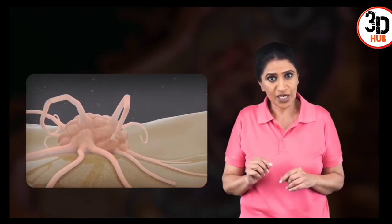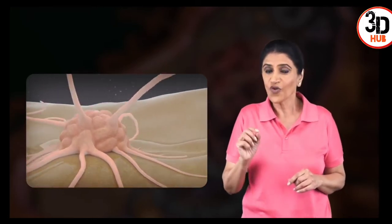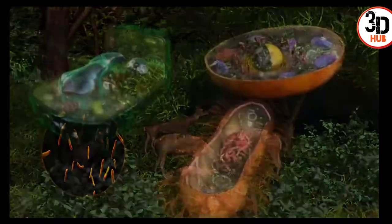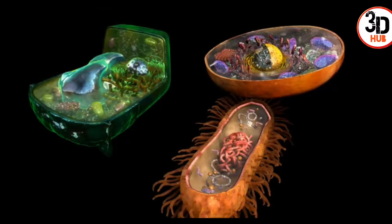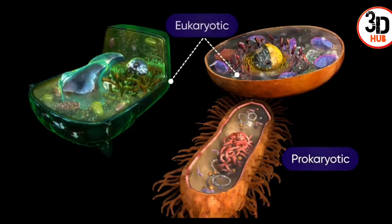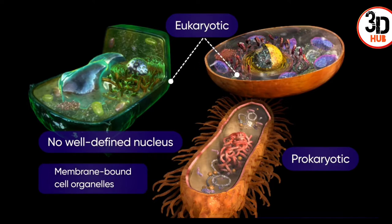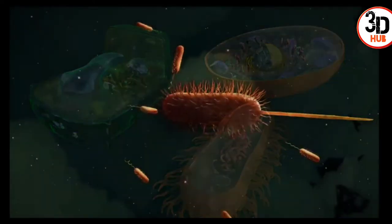Organisms are made up of cells, which are the basic structural and functional units of life. These cells may be categorized as prokaryotic and eukaryotic, based on the presence or absence of a well-defined nucleus and membrane-bound cell organelles.